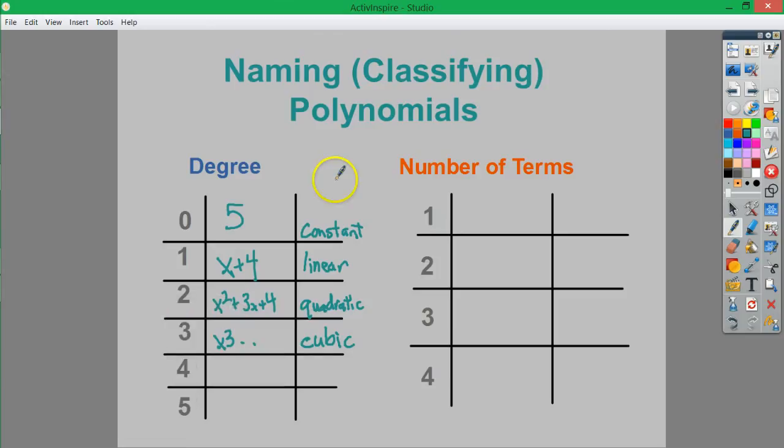If I have x to the 4th plus x squared minus 1, or whatever it happens to be, I'm going to refer to that as a quartic. And then finally, if I have x to the 5th, I'm going to consider that to be quintic.